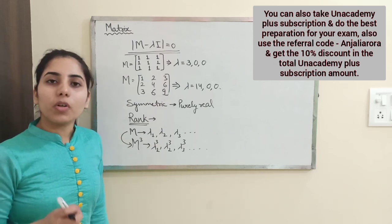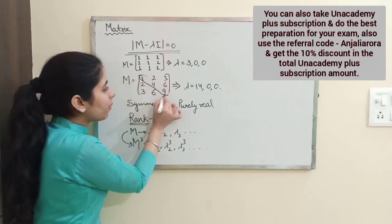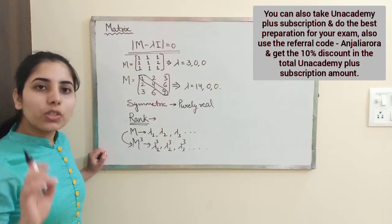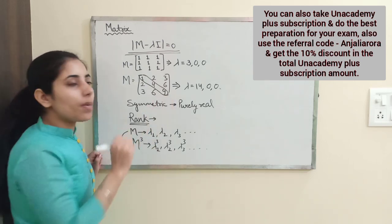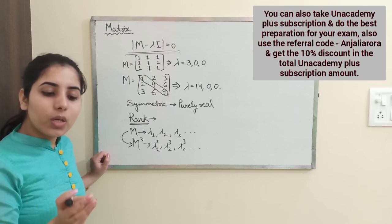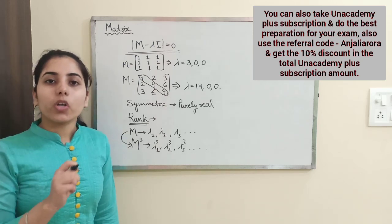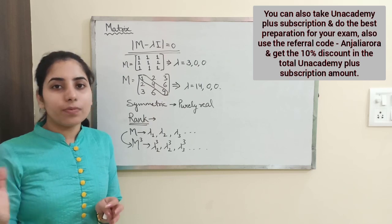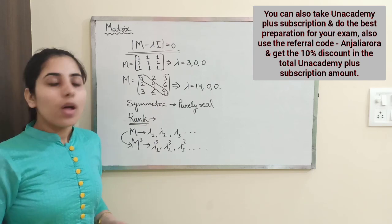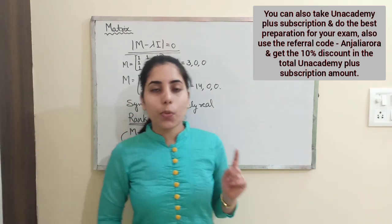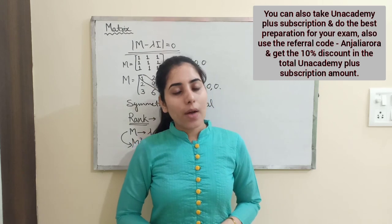Two key properties to remember: The trace of a matrix equals the sum of its principal diagonal elements, which also equals the sum of its eigenvalues. The determinant of any square matrix equals the product of its eigenvalues. These are very important results from the matrix portion that every student should know, as questions in the exam are very likely to require these concepts.